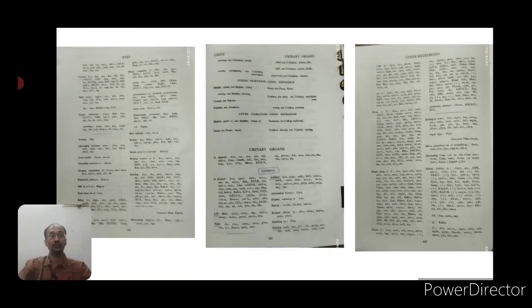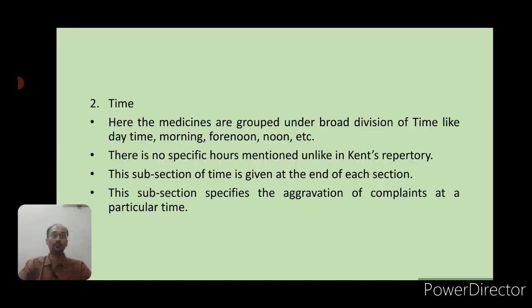After location rubrics, sensation rubrics start in alphabetical order — so you'll find rubrics beginning with 'A' first. The next subsection is time, where you find time divisions like daytime, morning, forenoon, noon, midnight, night, etc. There are no specific hours mentioned, unlike Kent's repertory. This is a unique feature: you will not find time aggravation or amelioration listed as 9 AM or 2 PM — just phases of time like daytime, morning, and night.